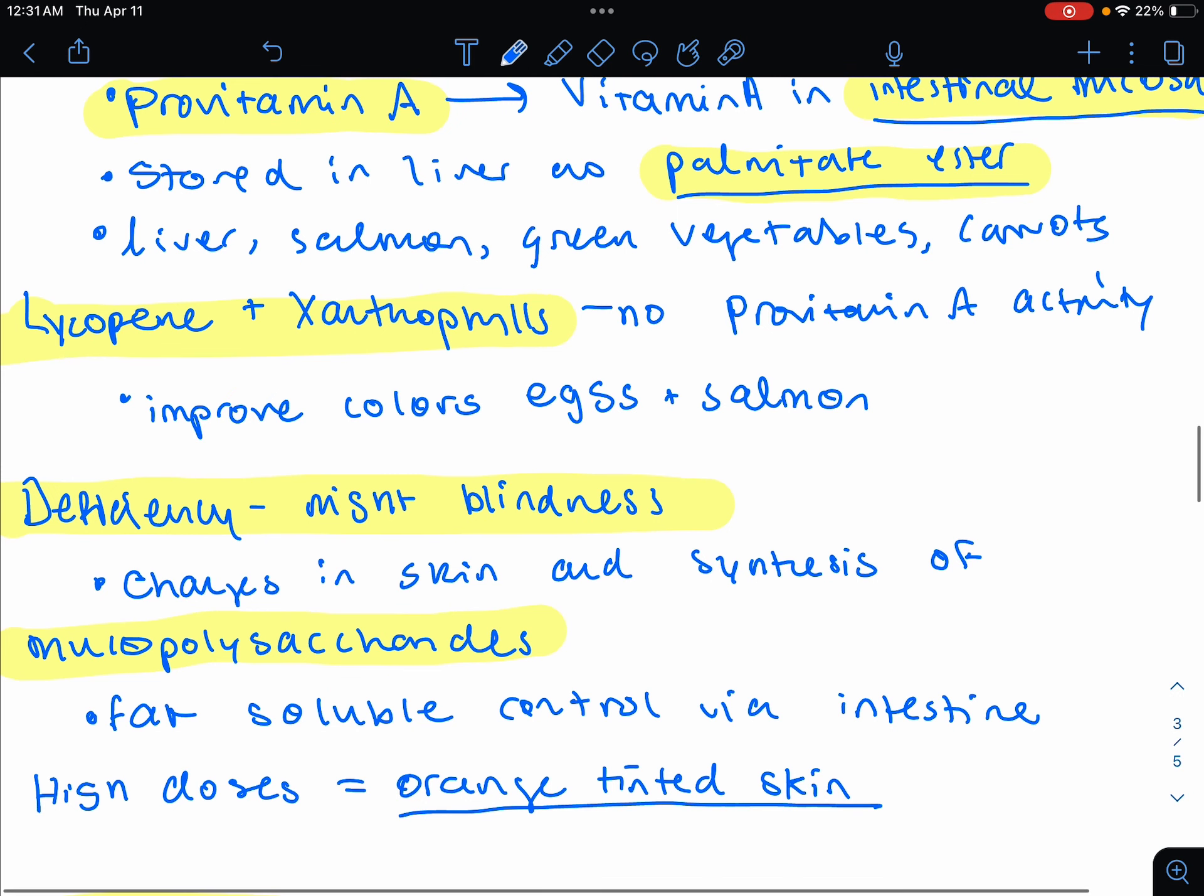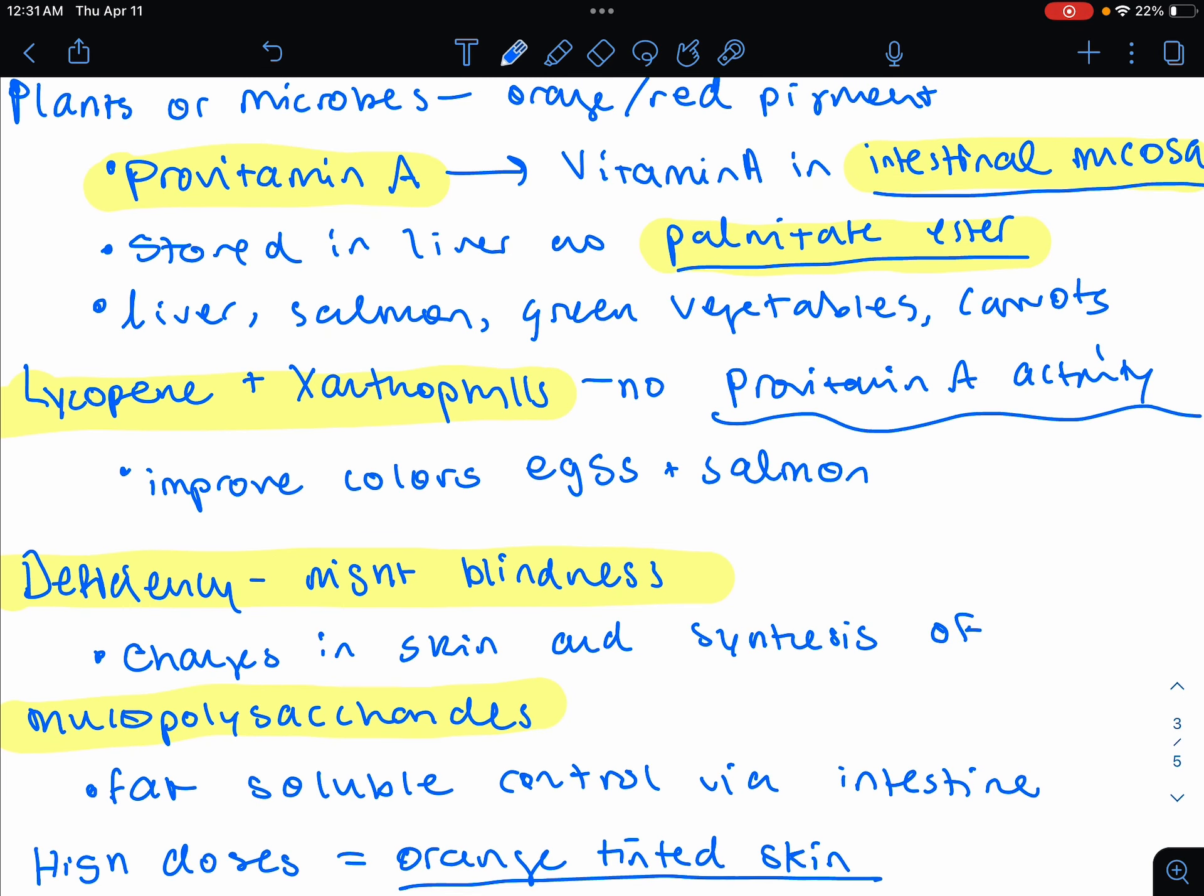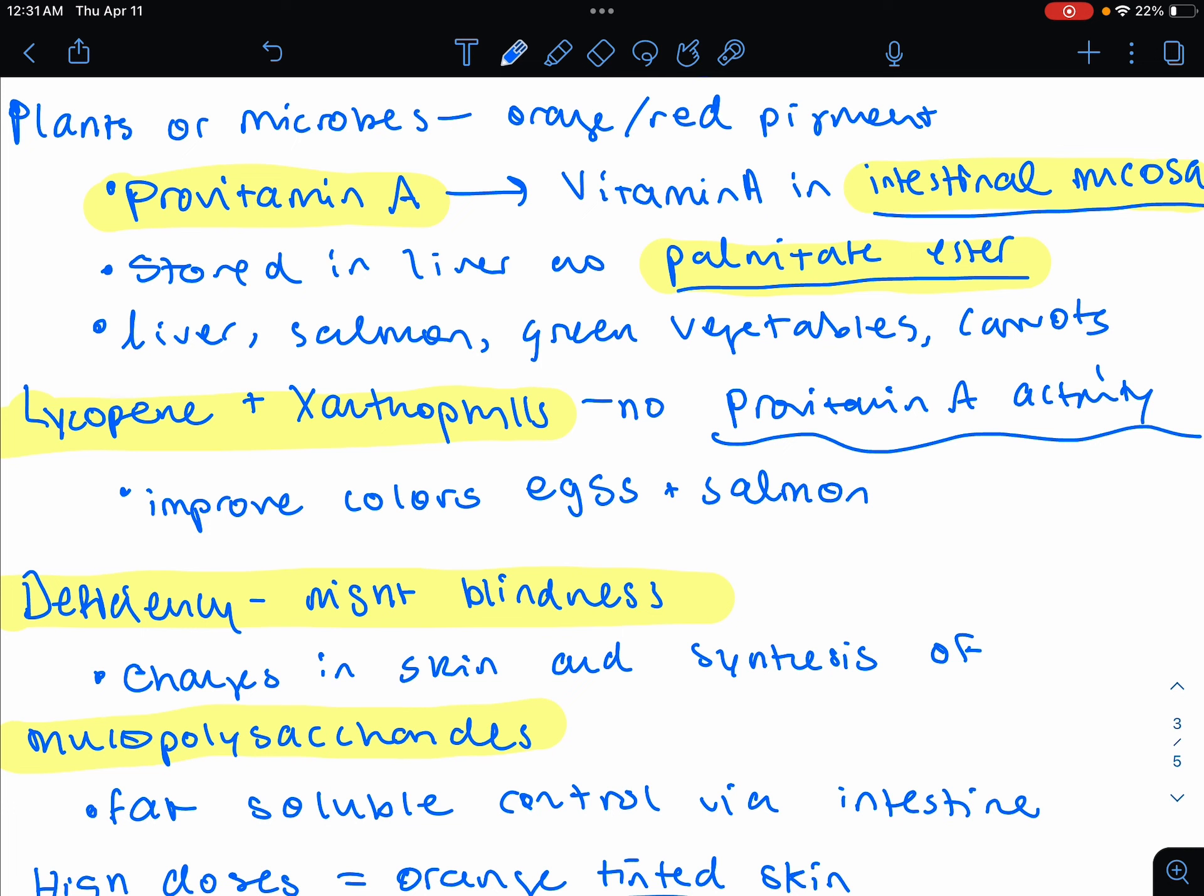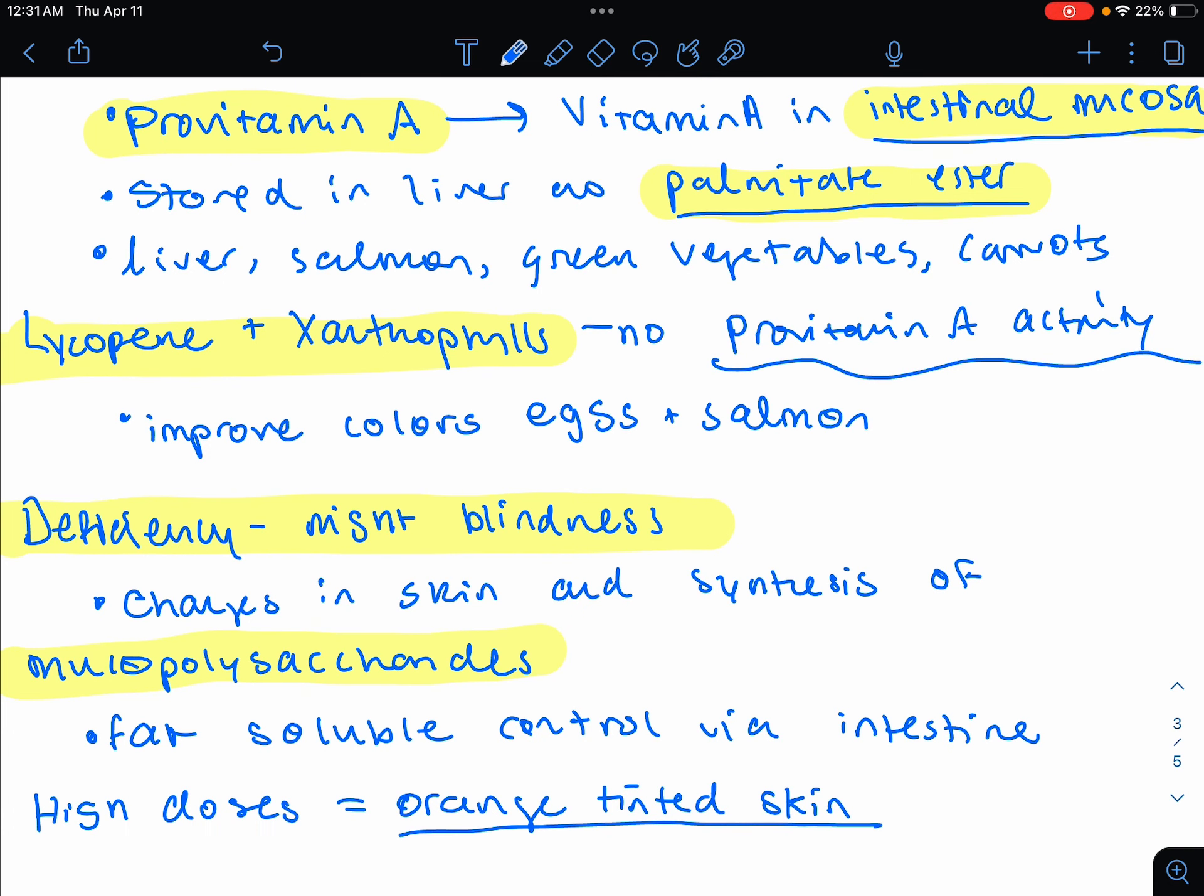You could also use it as a food coloring agent and other derivatives, such as lycopene and our xanthophylls do not have provitamin A activity. So when we're talking about this provitamin A activity, they can't become vitamin A in the intestinal mucosa. So the derivatives of lycopene and xanthophylls, which are derivatives of our beta-carotene, cannot go into vitamin A. However, you could use the derivatives to color the egg yolks as well as salmon to enhance their appeal, their visual appeal.